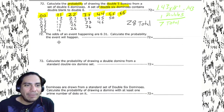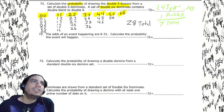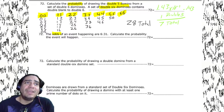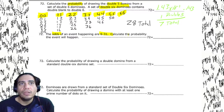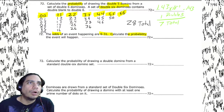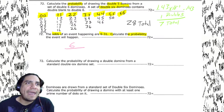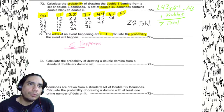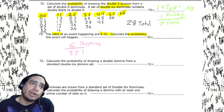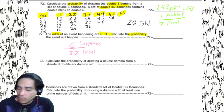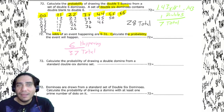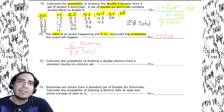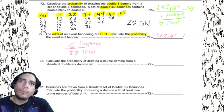An event happening has odds of six out of 31. Calculate the probability. Six is happening, 31 is not happening, so the total is 37. Six divided by 37 gives 1.62 times 10 to the negative one, or 0.162.